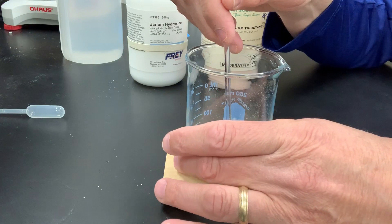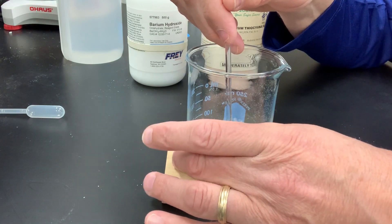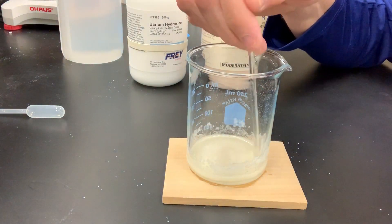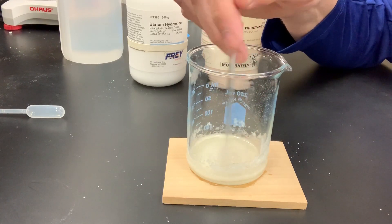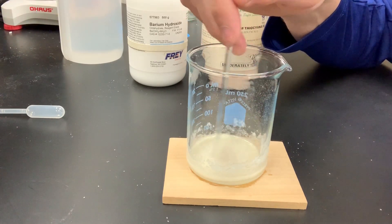So one of the products of this reaction is ammonia gas. And as I feel the beaker, it's getting, boy, it is really cold. We call these endothermic reactions because they take energy from the surroundings. It's called endothermic.